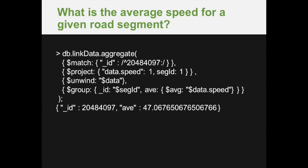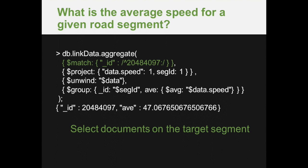That's the principle. Now let's take a look at how we would do this, choosing to create an average speed over a period of time for a given road segment. We'll begin with the aggregate command in MongoDB: db.collectionname.aggregate. This will work on the current database, which has elsewhere been selected in the MongoDB API. We now begin with our selection — that regular expression selection — so we're going to select on primary ID for segment ID 20484097. This is going to bring back everything for that segment ID.